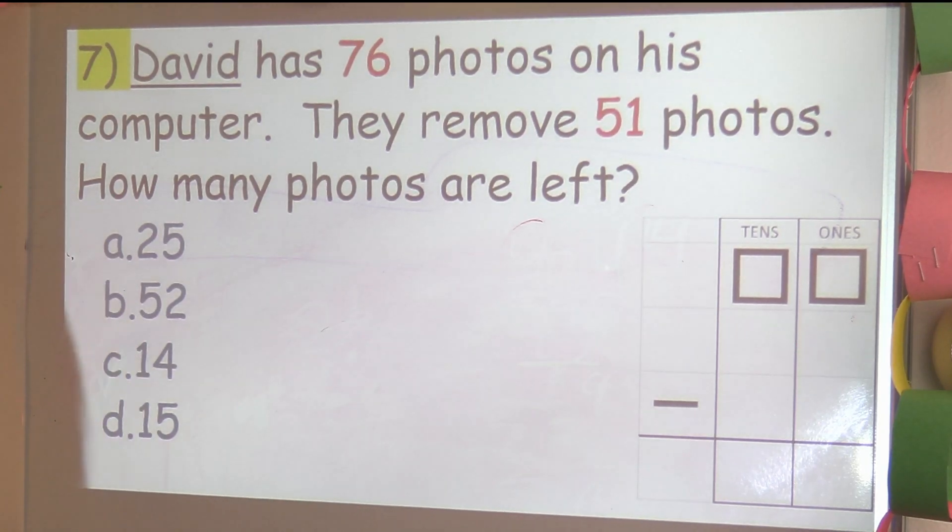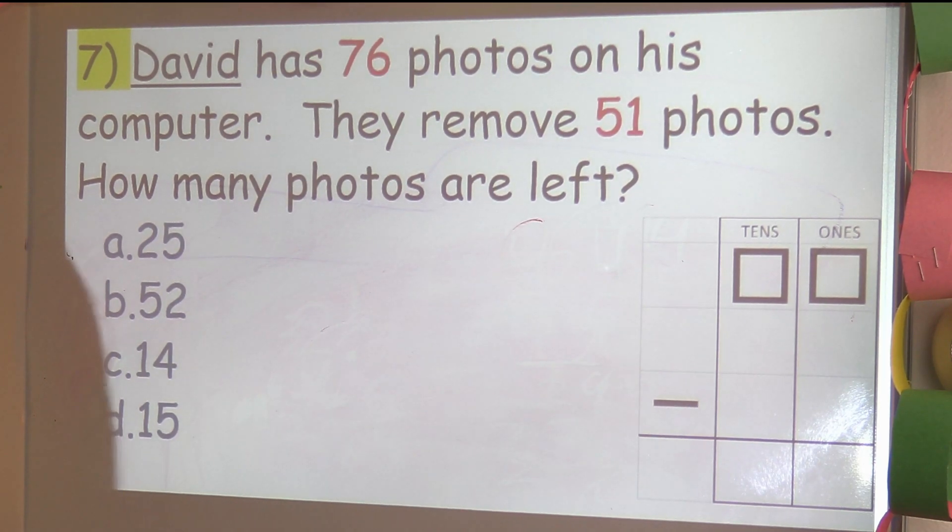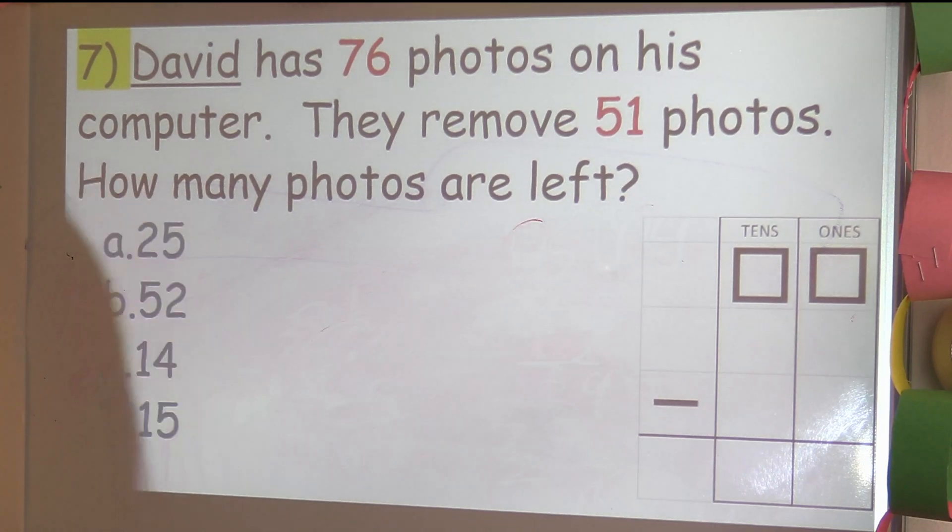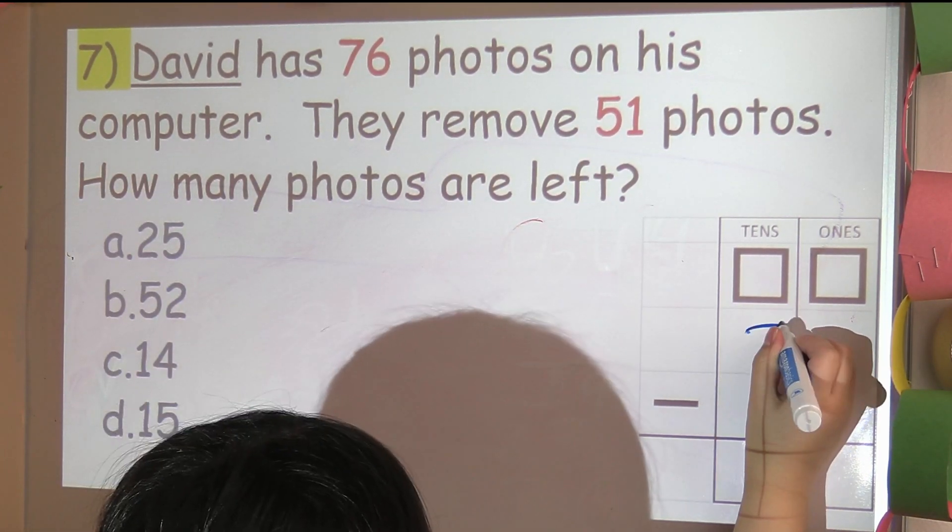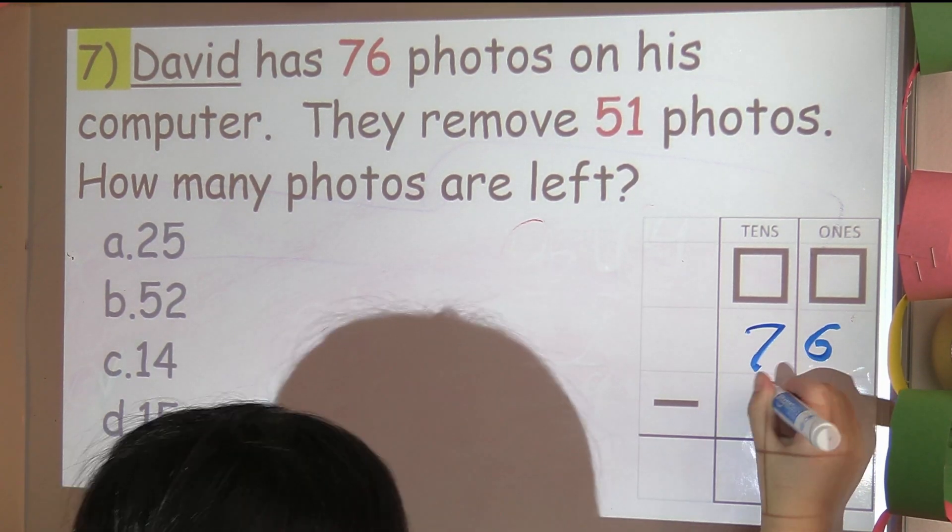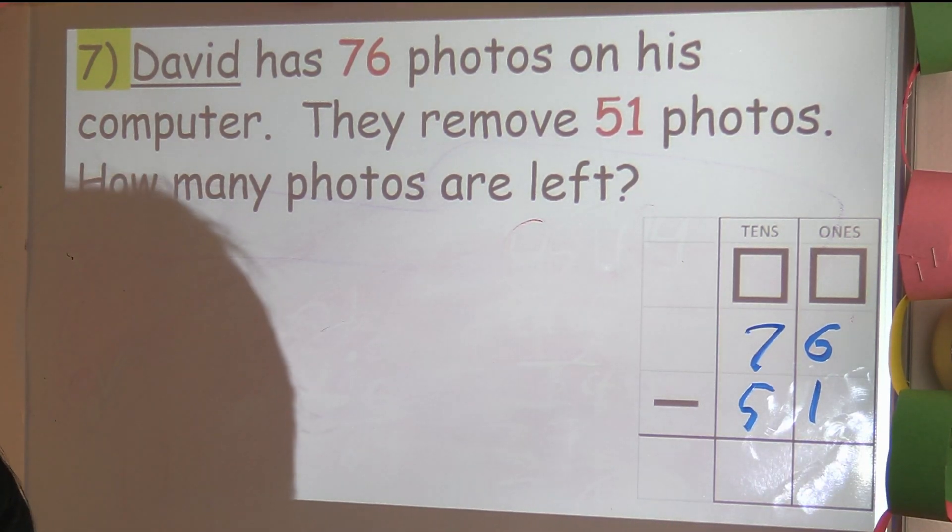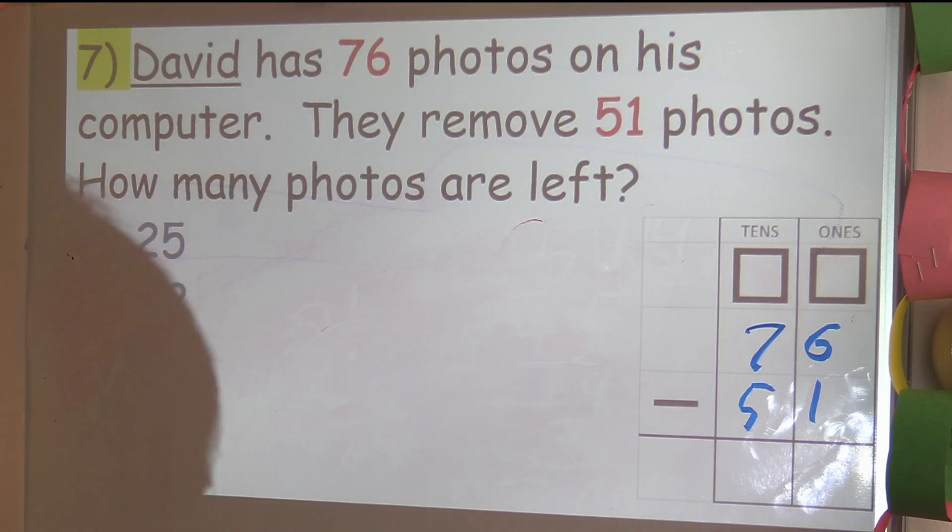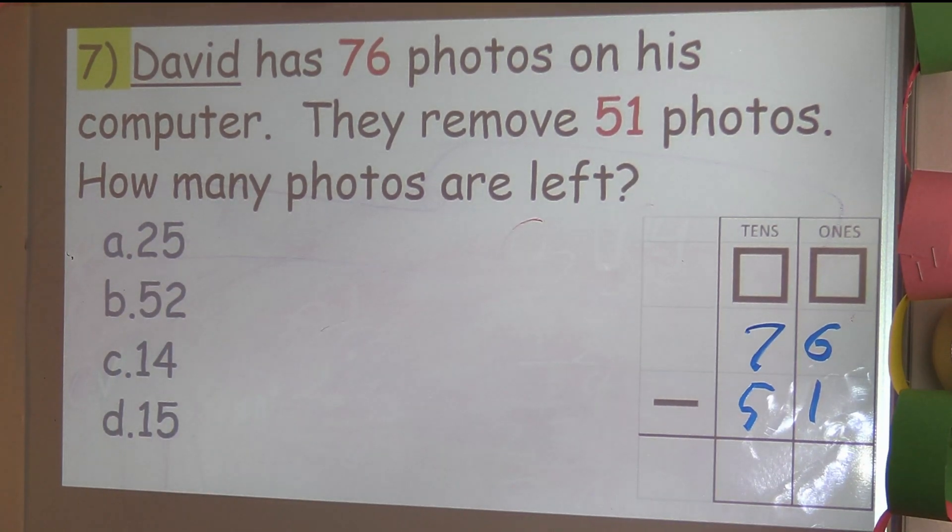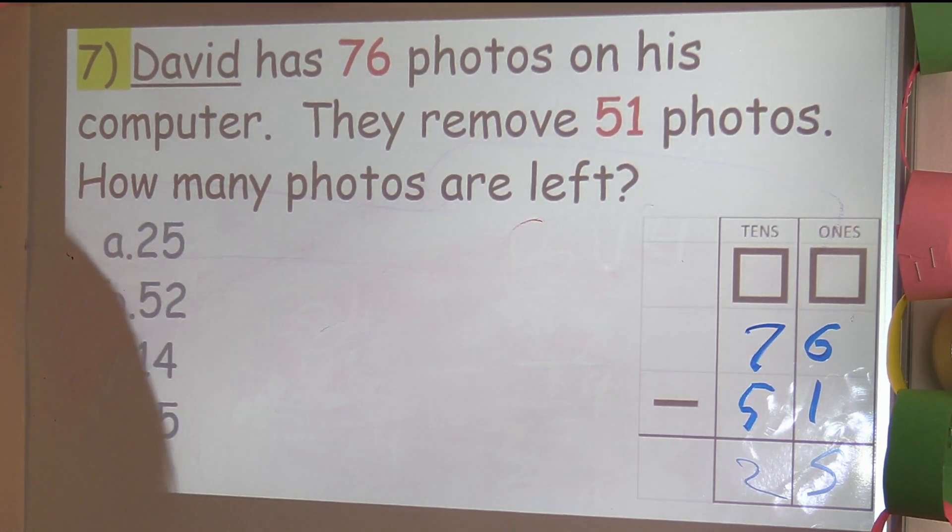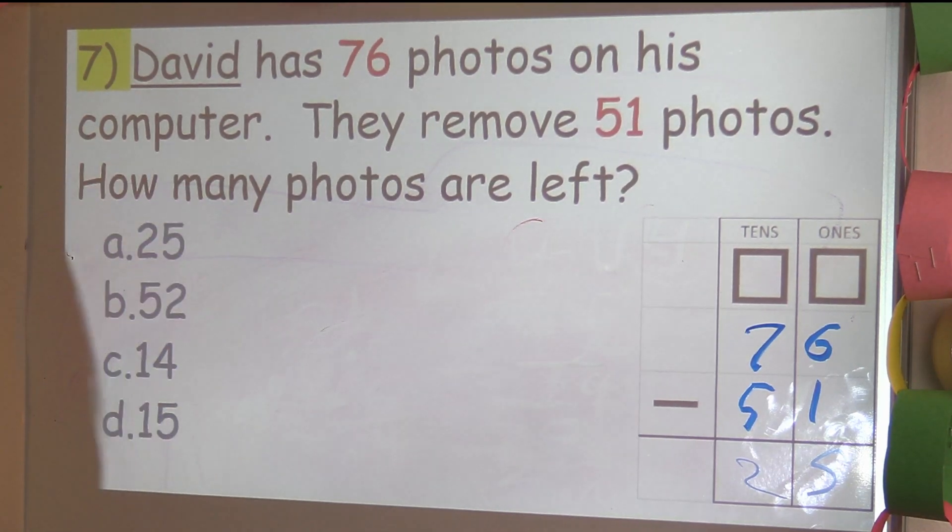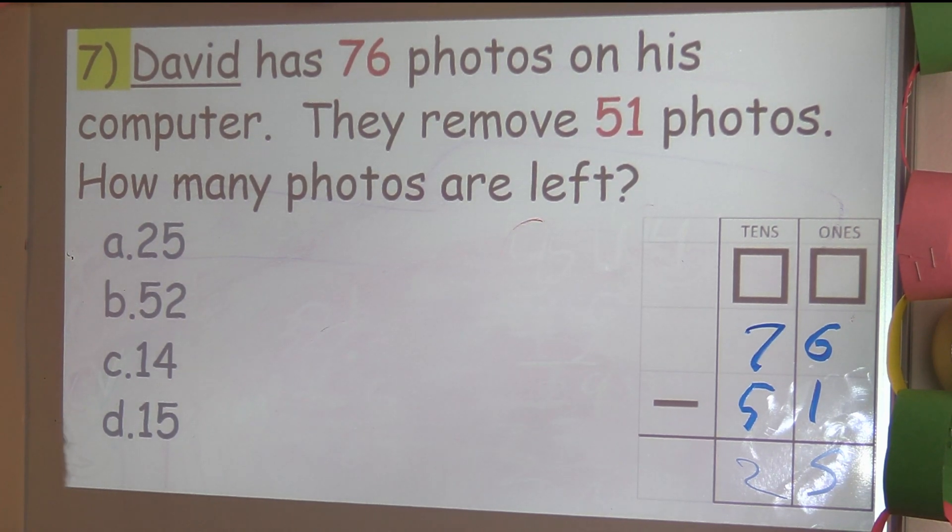David has 76 photos on his computer. They removed 51 photos. How many photos are left? We're going to use this column. It's going to be 76 minus 51. Do we have to regroup anywhere? No, you don't need to regroup. So 6 minus 1 is 5, and 7 minus 5 is 2. So we got 25. And we got 25.